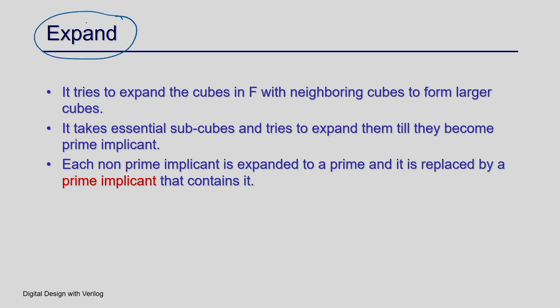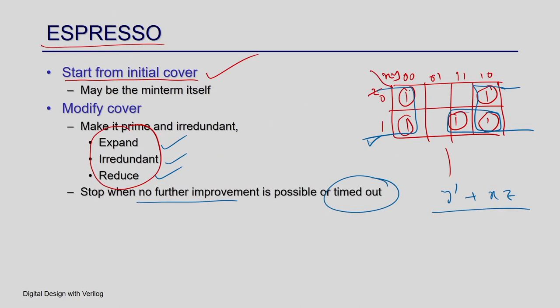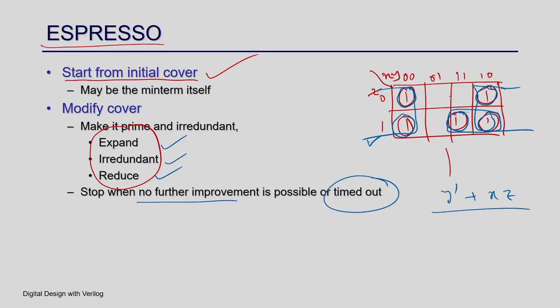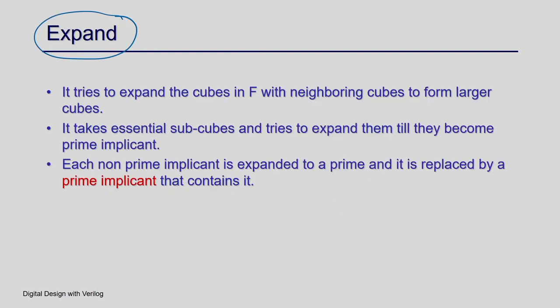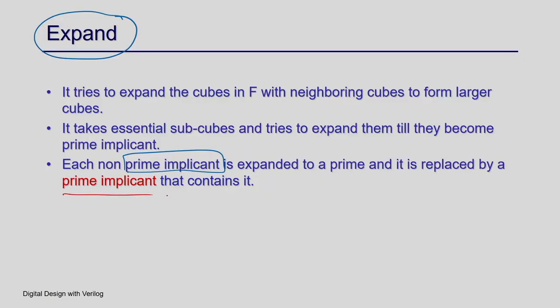The first operation is expand. You have an initial cover or some cover, and it takes one cube from this cover — initially each cube is of size 1. It will take an individual cube and try to expand it over the onset and don't care set, but it will not expand into the offset (the zeros). It will stop when it reaches a prime implicant. You take one implicant in the current cover and keep expanding until you reach a prime implicant, then it stops. It is a random process — you might choose some arbitrary k implicants and expand in any direction, but it stops only when you reach a prime implicant.